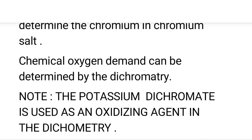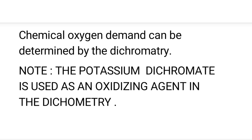Chemical oxygen demand can also be determined by dichrometry — that means, whether oxygen demand in a chemical reaction is sufficient can be determined using this method. As a summary note: potassium dichromate is used as an oxidizing agent in dichrometry. The titration involving potassium dichromate is called dichrometry.